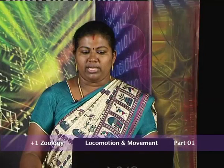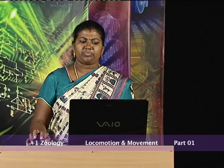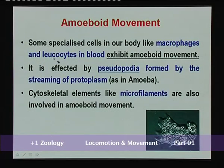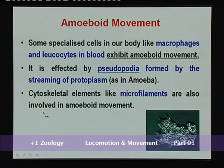What are the different types of movement in the human body? The cells of the human body exhibit three main types of movement: amoeboid movement, ciliary movement, and muscular movement. In the case of amoeboid movement, some specialized cells in the body like macrophages and leukocytes in blood show amoeboid movement.